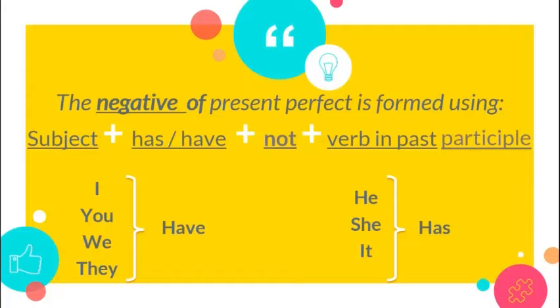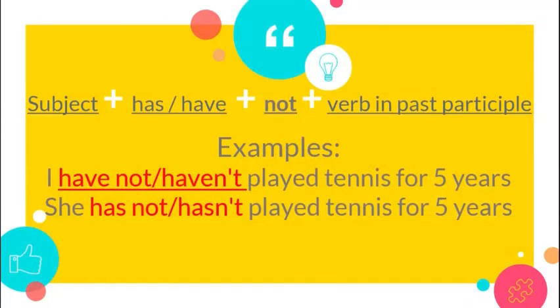Now, the example: I have not or I haven't played tennis for five years. She has not or she hasn't, using the contraction form, played tennis for five years.